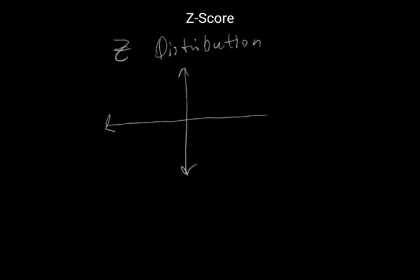So the first thing I would like to introduce you to is the z-distribution. And so the z-distribution is a normal distribution centered at 0. So this is 0 right here with a standard deviation of 1.